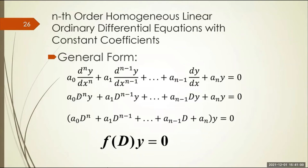Instead of writing out all the Leibniz notation, you can write the equation using differential operators D to the n, D to the n minus one, and so on down to the first order. You can then factor out y to get the form f(D)·y equals zero, where f(D) is a polynomial in the differential operator D.